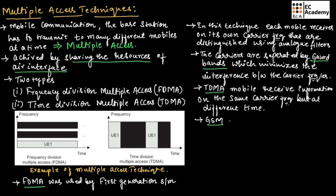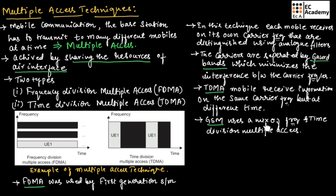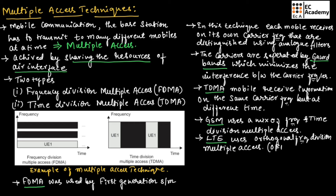GSM uses a technique which is a mix of frequency division and time division multiple access. LTE, which stands for long term evolution, uses a technique known as orthogonal frequency division multiple access, commonly known as OFDMA.